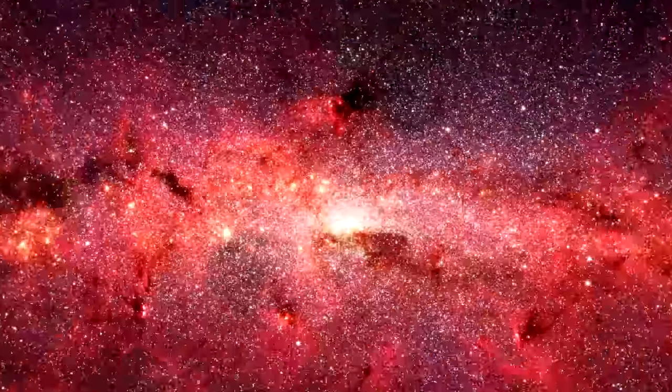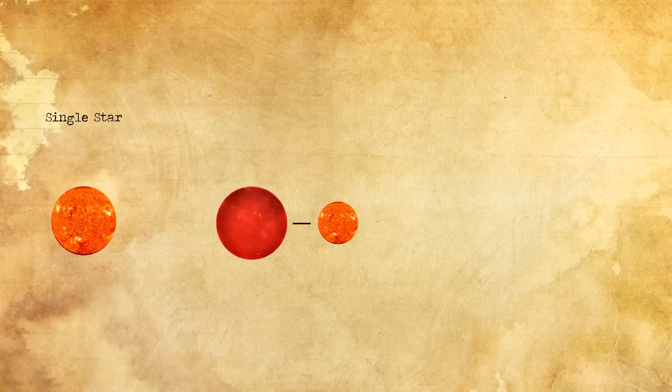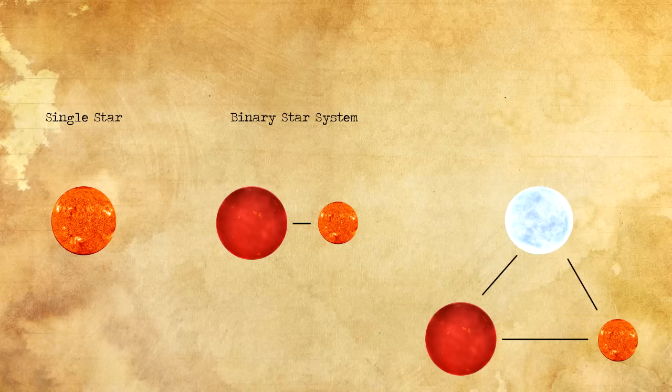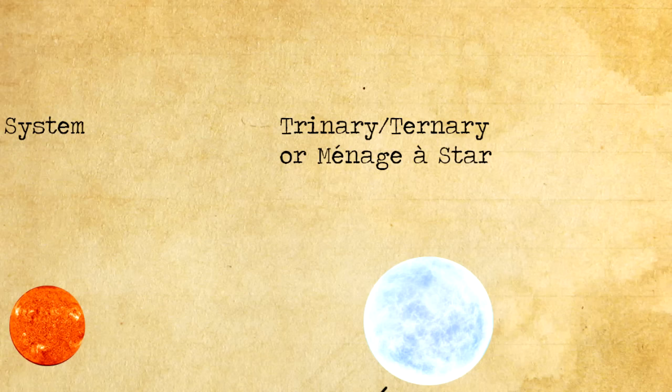Out again, we find the Milky Way. The Milky Way contains at least 100 billion stars. Stars can be by themselves, or orbiting each other, called a binary star system, or occasionally a group of three, which is called a trinary, ternary, or menage star.